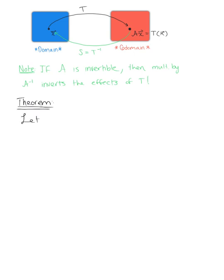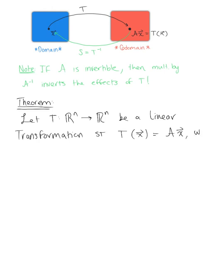We want to let t from Rn to Rn be a linear transformation such that the image of vector x under the action of t is defined by matrix A times vector x, where A is the standard matrix of t.